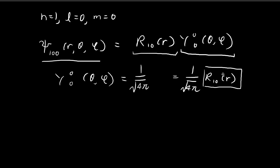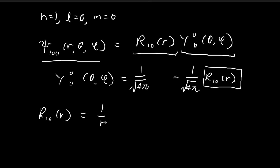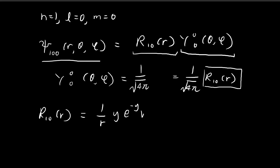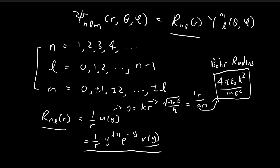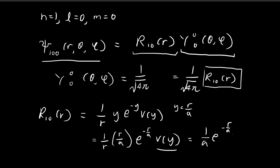R₁₀ is equal to (1/r) × y^(l+1) × e^(−y) × v(y). Since l = 0, we just have y. Don't forget, y can be expressed as r/(an), and for the ground state where n = 1, we simply have y = r/a, where a is the Bohr radius. So R₁₀ = (1/r) × (r/a) × e^(−r/a) × v(y).